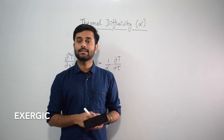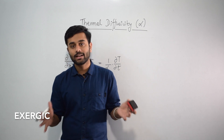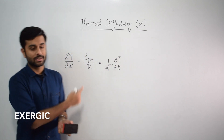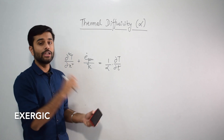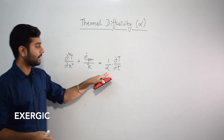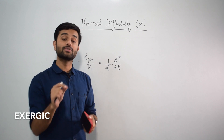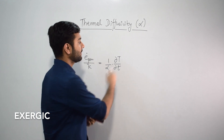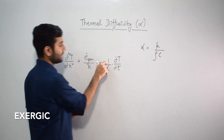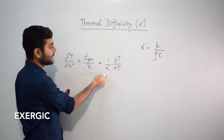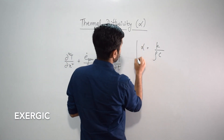We were discussing the 1-dimensional heat conduction equation through an infinitely large plate or wall. This was the equation we reached for constant thermal conductivity, where a new term alpha was introduced. Alpha is the thermal diffusivity, defined numerically as α = K / (ρC). We wrote it as 1/α where α = K / (ρC).